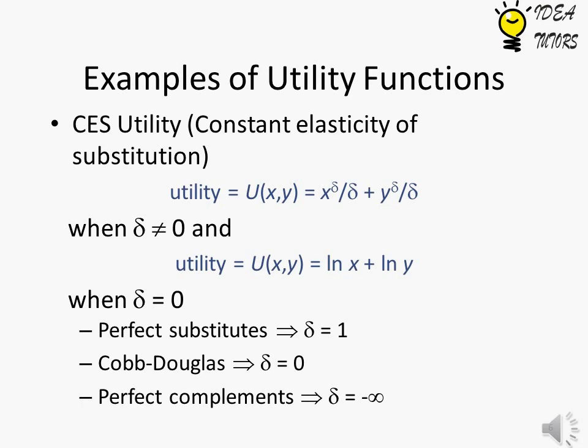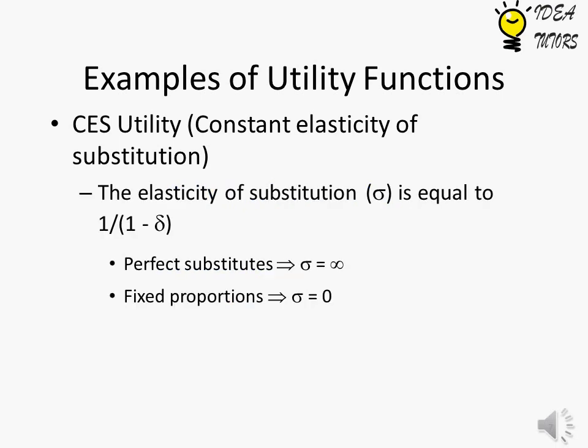For perfect substitutes, gamma is 1. For Cobb-Douglas, gamma is 0. For perfect complements, gamma is minus infinity. Elasticity of substitution is equal to 1 divided by 1 minus gamma.